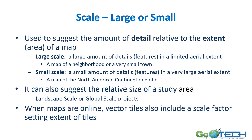Scale — large or small. This term has always been confusing and I still have to think about it. It's used to suggest the amount of detail relative to the extent or area of a map. A large scale map shows a lot of detail or features in a very limited aerial extent — a good example is a map of a neighborhood or small town. Small scale, on the other hand, has a small amount of detail covering a very large aerial extent, such as a map of the North American continent or the world globe. It can also refer to the relative size of a study area, such as landscape scale or global scale projects.